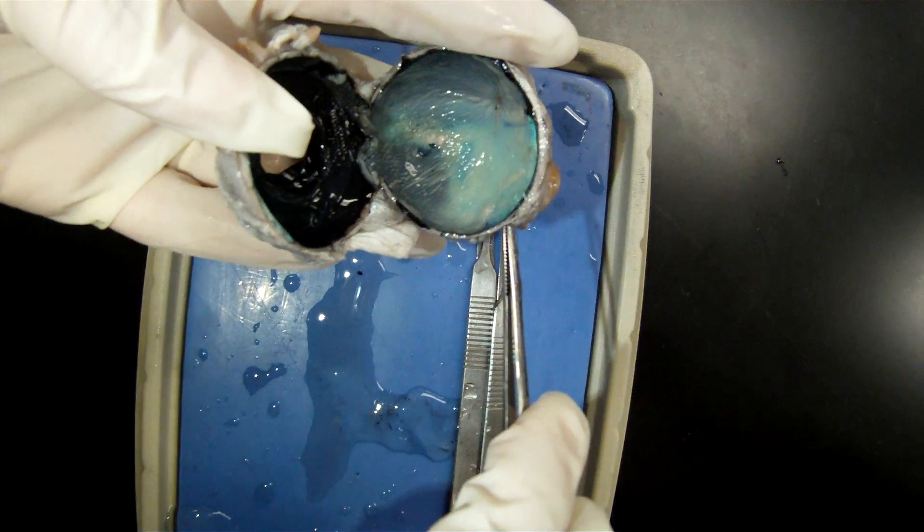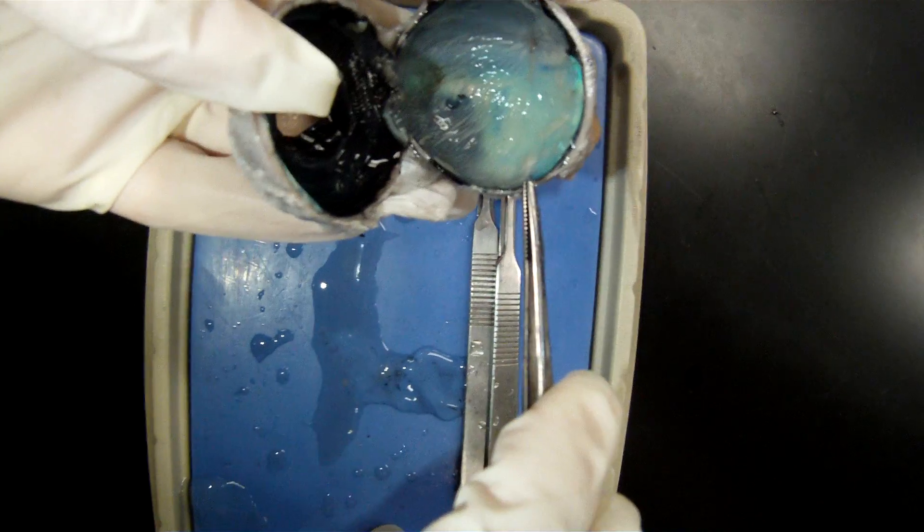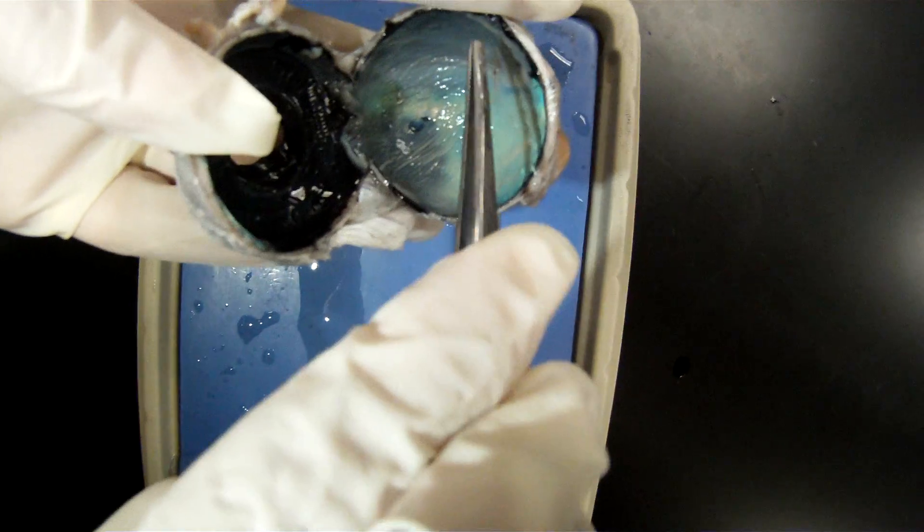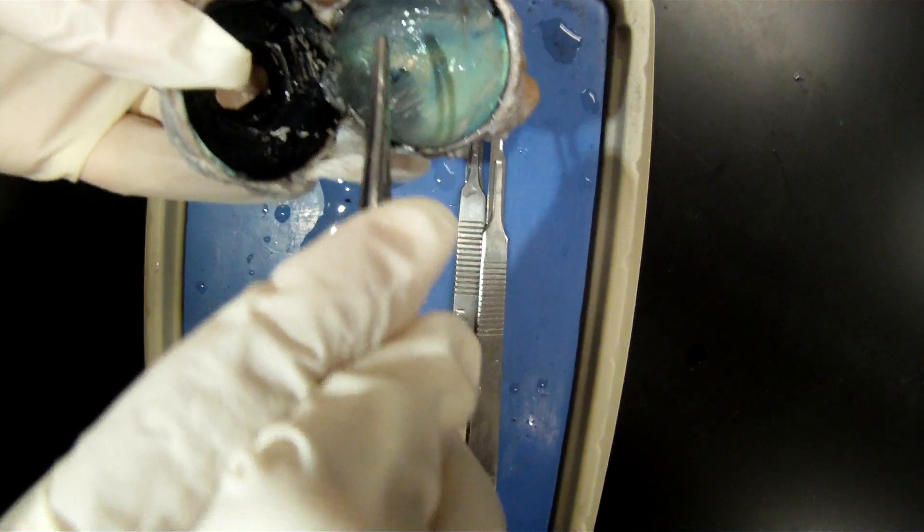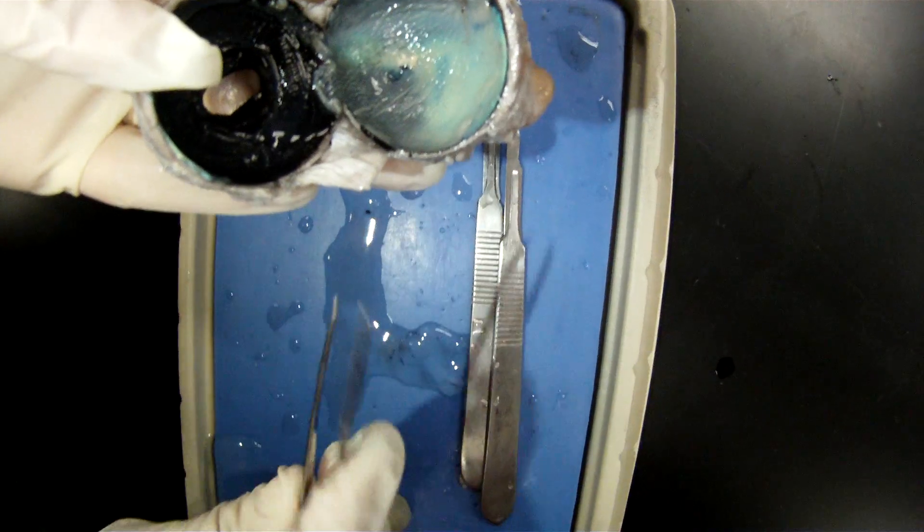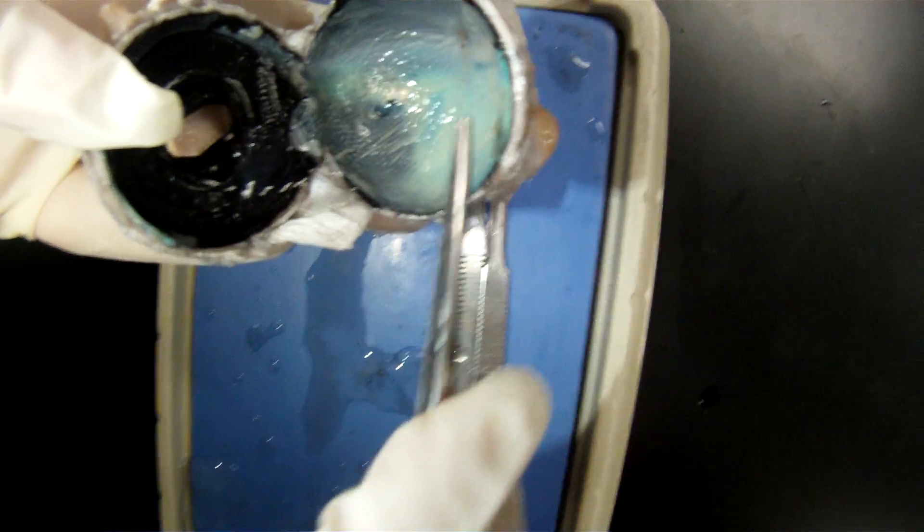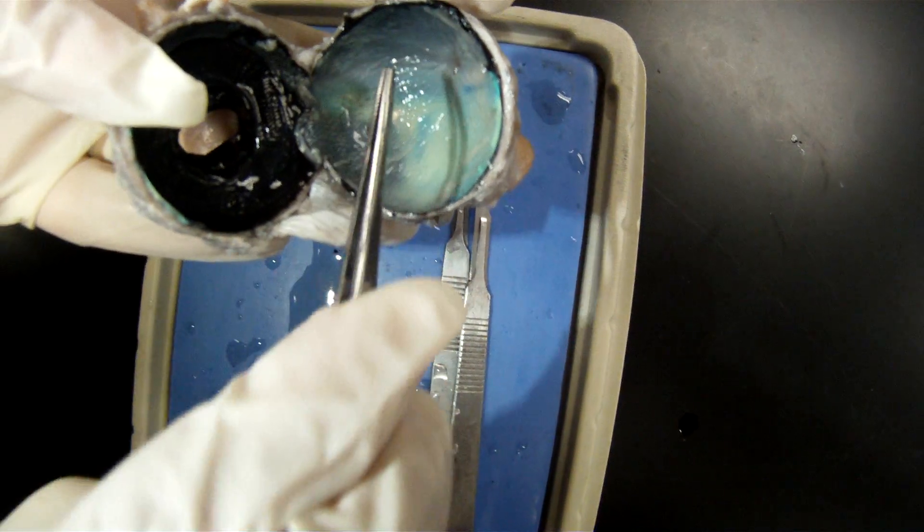This is the sclera. The black is the choroid, and the membrane that is still intact is the retina. So most superficial, we had the sclera, and moving deeper, we had the choroid, and deeper to that was the retina.